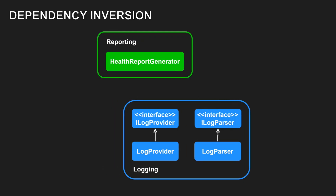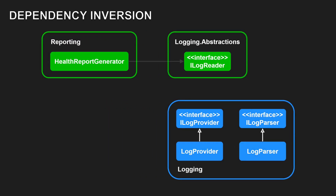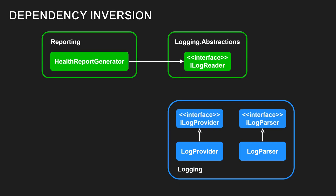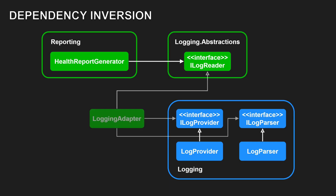In its simplest form, we define an abstraction — a contract — that both modules depend on. This effectively inverts the dependency at the module level, hence the name. If we can't make a specific module depend on the abstraction directly, for example when it comes from another team or a third-party library, we add an adapter that implements the contract and connects the two worlds.